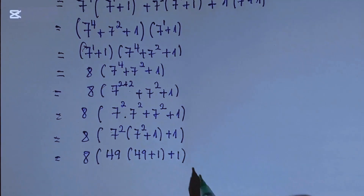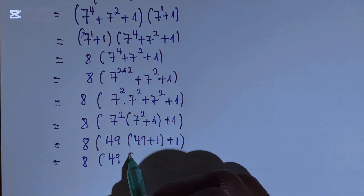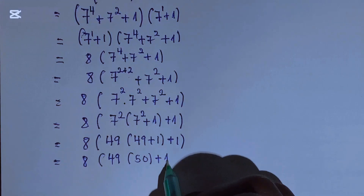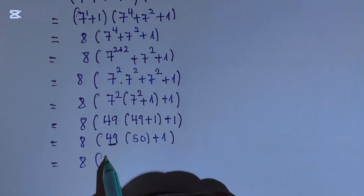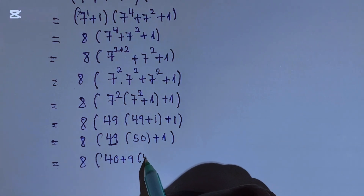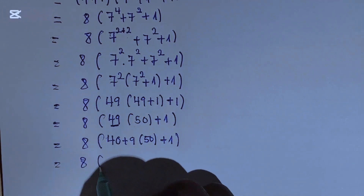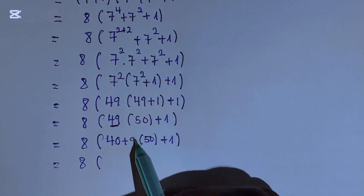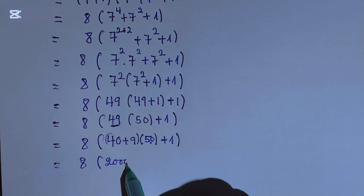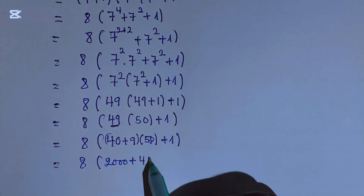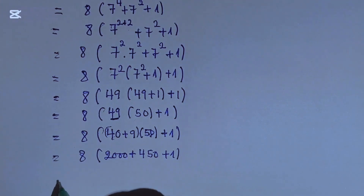This will be equal to 8 times 49 times 50 plus 1. We can write 49 as 40 plus 9, then times 50 plus 1. Multiplying these numbers: 40 times 50 equals 2000, plus 9 times 50 equals 450, plus 1. We use this method because no calculator is allowed. So inside the bracket we get 2000 plus 450 plus 1 equals 2451, then times 8.